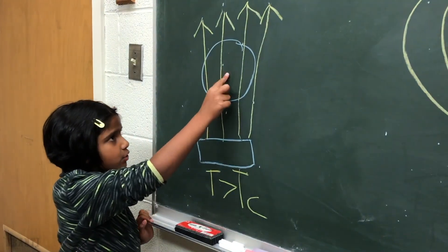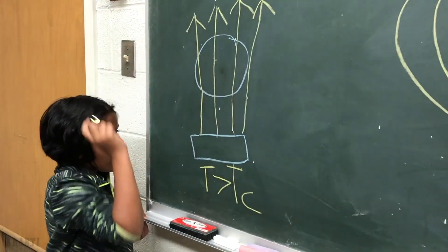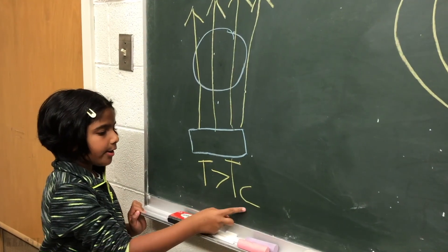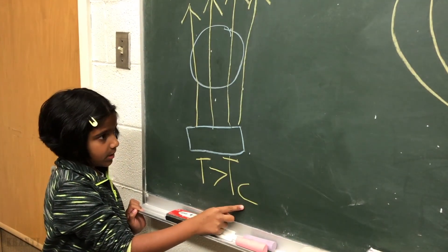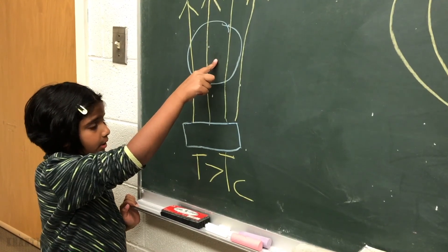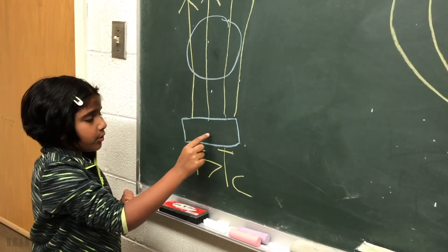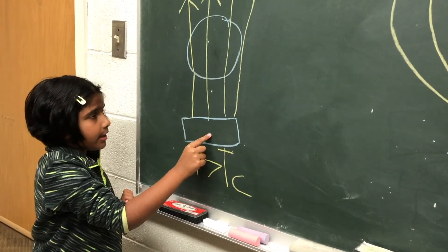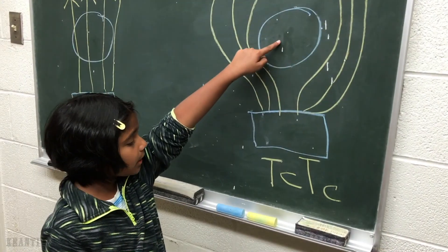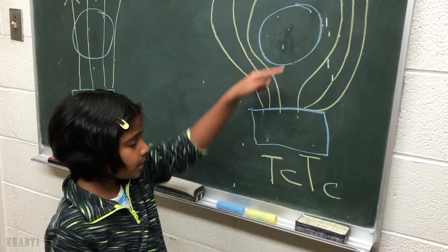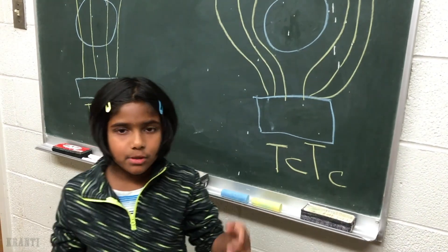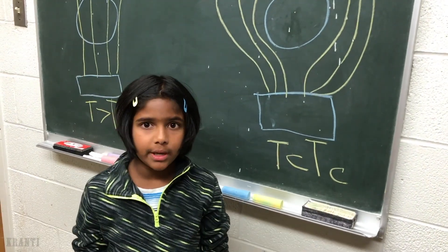Pretend that this is superconductor material and this is a magnet. When it is at a higher temperature than the critical temperature, it is not a superconductor yet, so the magnetic field of the magnet goes through the superconductor material. When the superconductor material is at a lower temperature than the critical temperature, it becomes a superconductor.